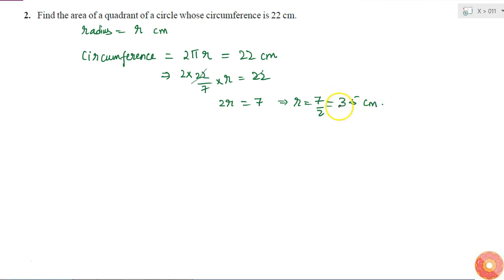So now I got the radius of the circle. Now I have to find the area of a quadrant. So what is the meaning of a quadrant? The word quad means 4. So quadrant means 1 fourth of a circle.